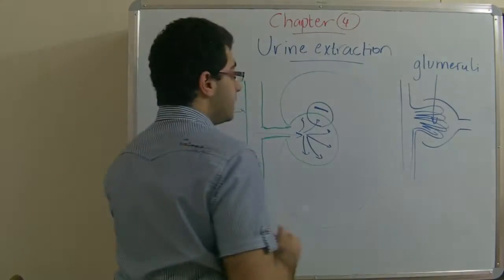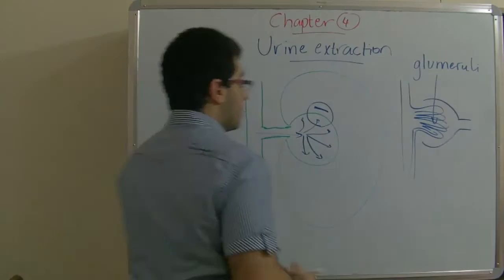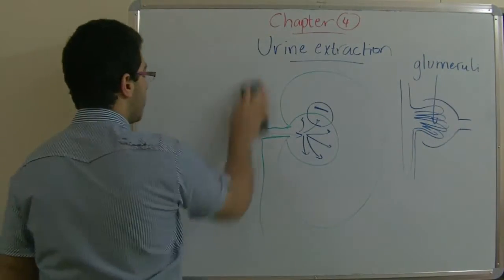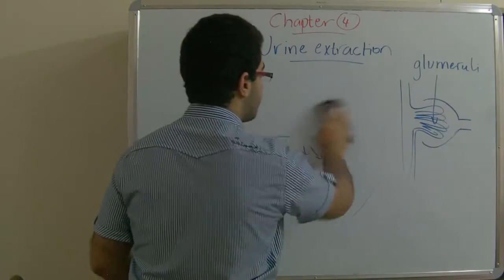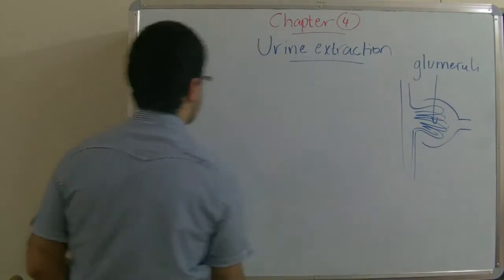So, the blood is filtered at this point. Here, the blood goes inside the glomeruli and the plasma is filtered from the blood. This plasma contains water,